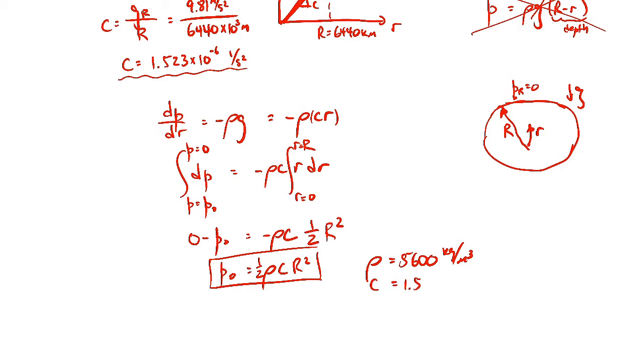C we worked out before. That's the 1.523 times 10 to the minus 6th, one over second squared. And then R was the 6440 times 10 to the third meters.